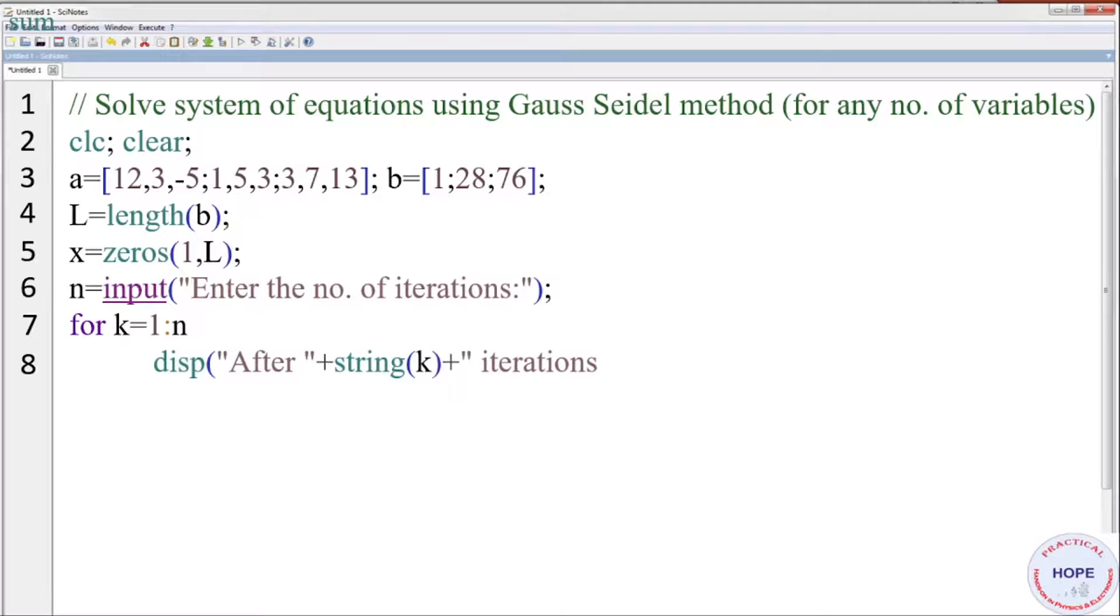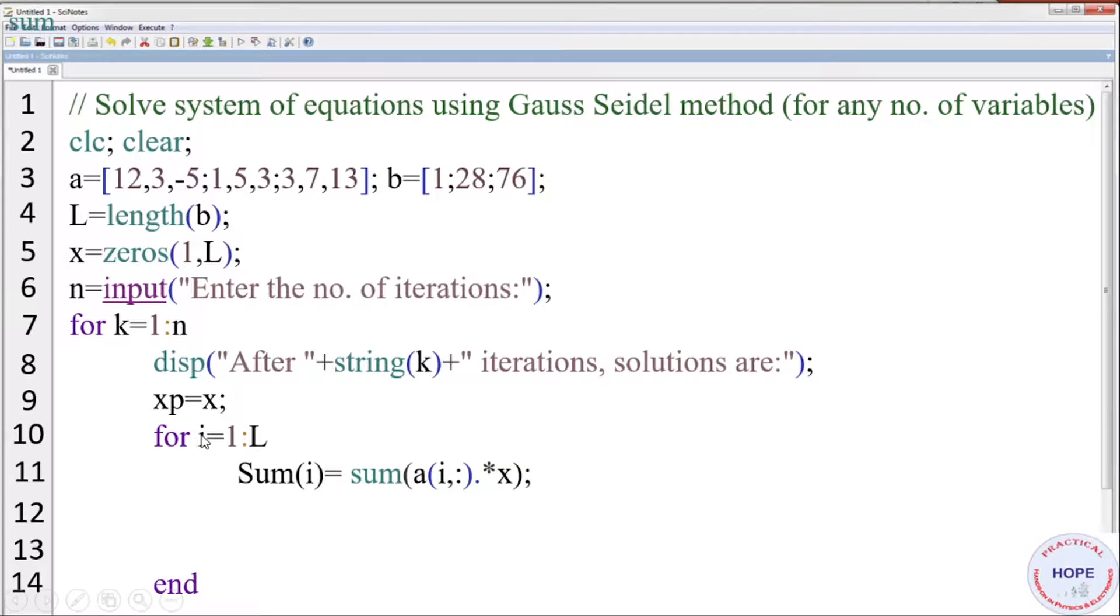Display after string k iteration solutions are. Next we are assigning x to xp because in the program we will update the value of x. Next we define a for loop that will run from 1 to L. Now as discussed earlier first we define sum i equal to sum a i comma colon dot star x. Say i is equal to 1. Then sum 1 equal to sum a i is 1. So first row colon that means all the columns basically we are considering first row of a and we are multiplying it element wise. That's why there is dot and star with x.